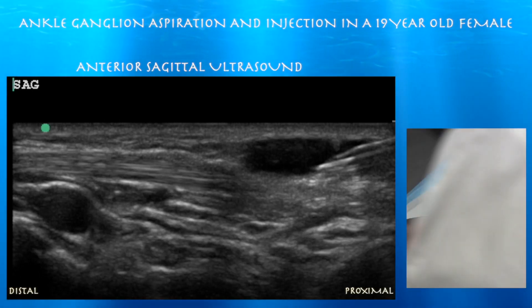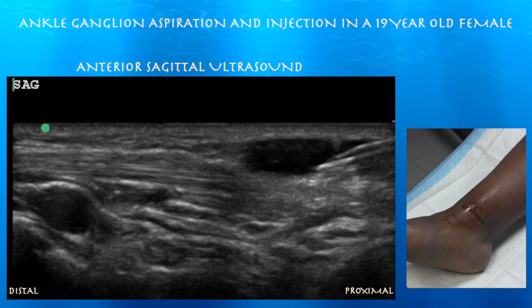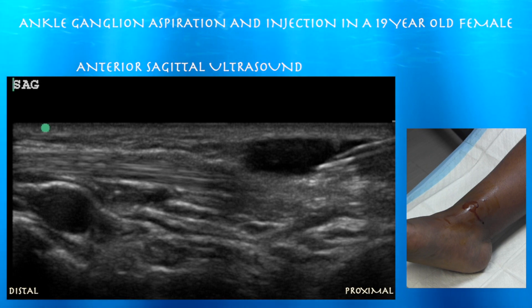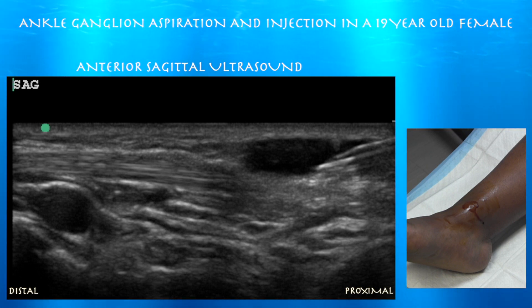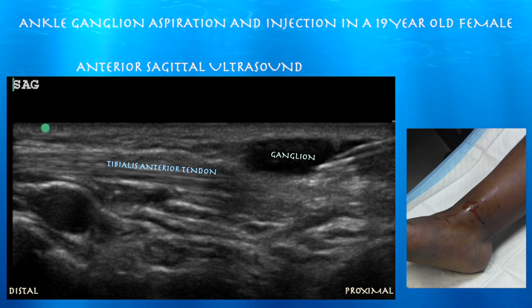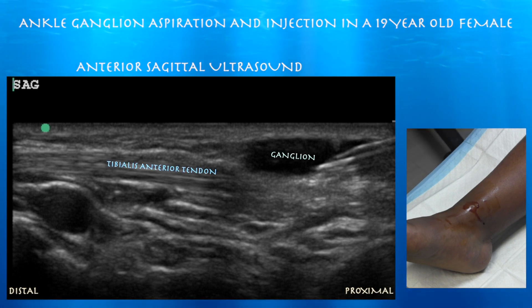19-year-old female with pain in the right ankle going on for almost a year, no injury. She has a ganglion just medial to the tibialis anterior tendon. We're going to go ahead and do an ultrasound-guided aspiration and cortisone injection.